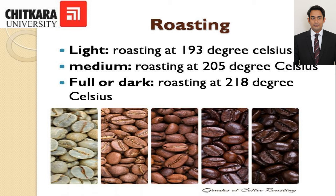Light roasting is done at 193 degrees Celsius for a light color. This degree of roasting preserves the delicate aroma of coffee. Medium roasting is done at 205 degrees Celsius, giving a stronger flavor than light roasting. Full or dark roasting is done at 218 degrees Celsius for a dark color, and it gives a bitter flavor.